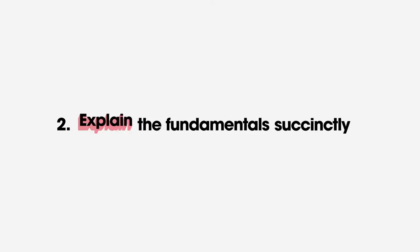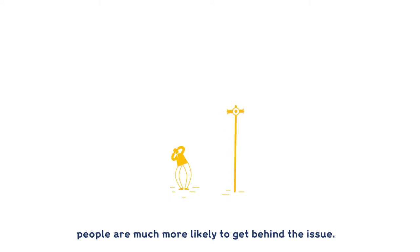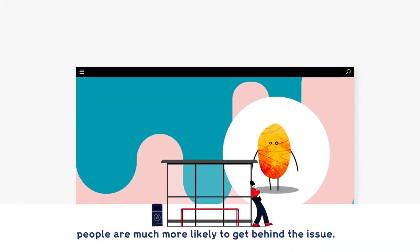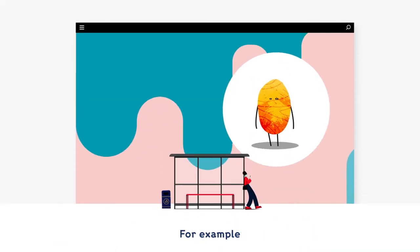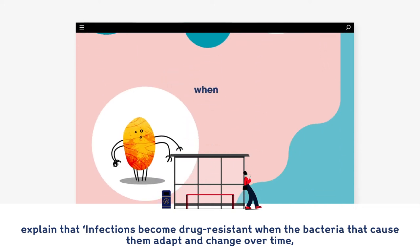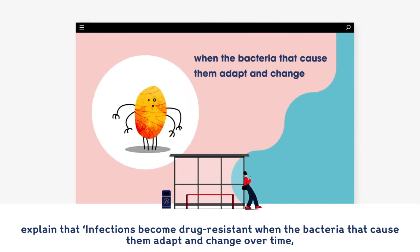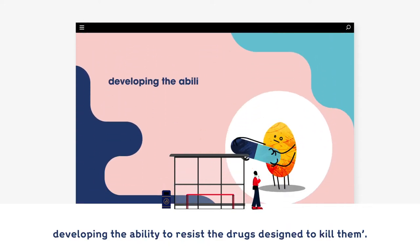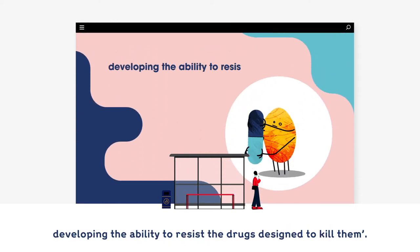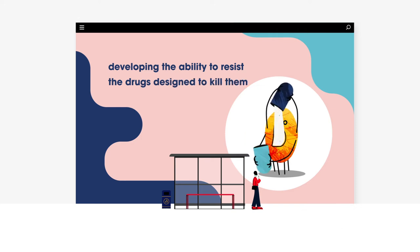2. Explain the fundamentals succinctly. When the science is easy to understand, people are much more likely to get behind the issue. For example, explain that infections become drug-resistant when the bacteria that cause them adapt and change over time, developing the ability to resist the drugs designed to kill them.